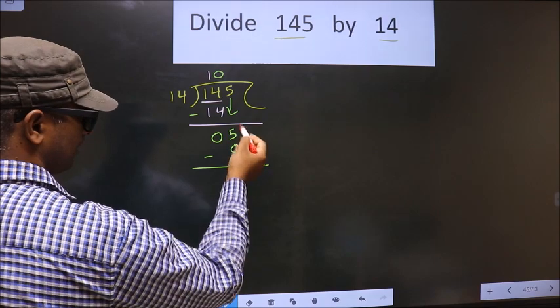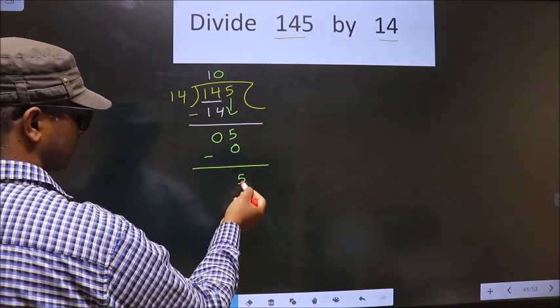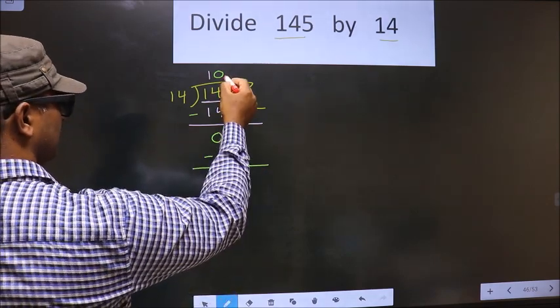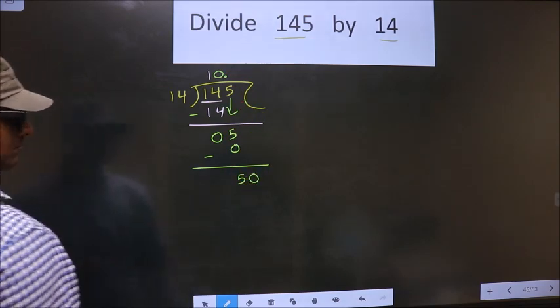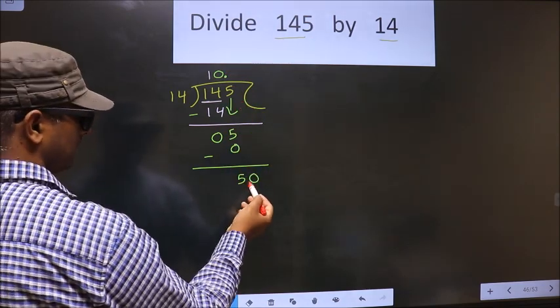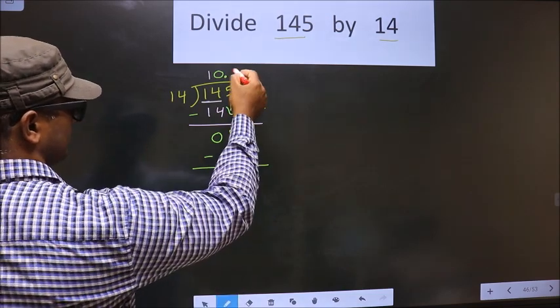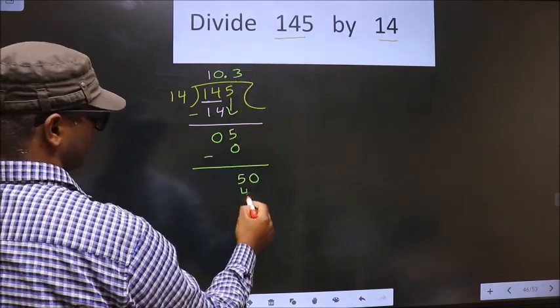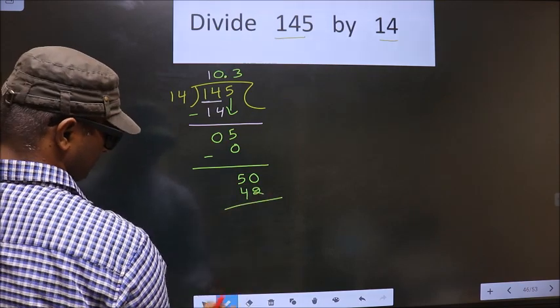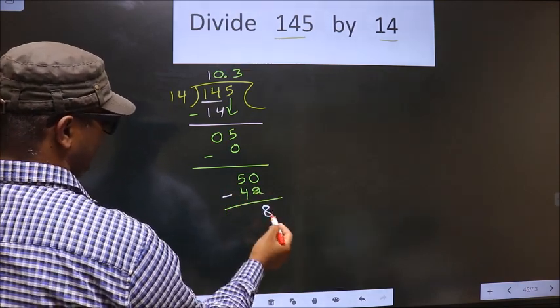Now, here we did not bring any number down. So 5 is smaller than 14. Now you put a dot. Take 0. Now here we have 50. A number close to 50 in 14 table is 14 times 3 is 42. Now you subtract. You get 8.